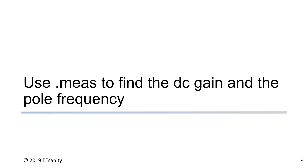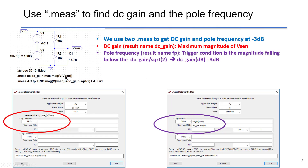We have discussed the measurement function in LTSpice before. Now we want to show how to use it to find the DC gain and the pole frequency. The AC amplitude is changed back to 1. The left window shows how to find the DC gain: we choose the applicable analysis as AC, name the result DC_gain, and trigger it as the maximum value of the magnitude of voltage at Vsense. This maximum magnitude will be defined as the DC gain.